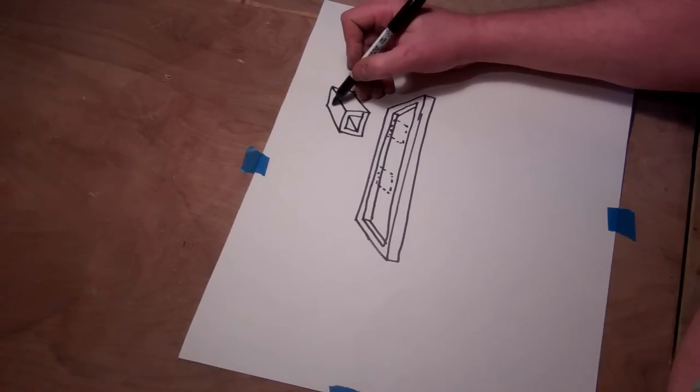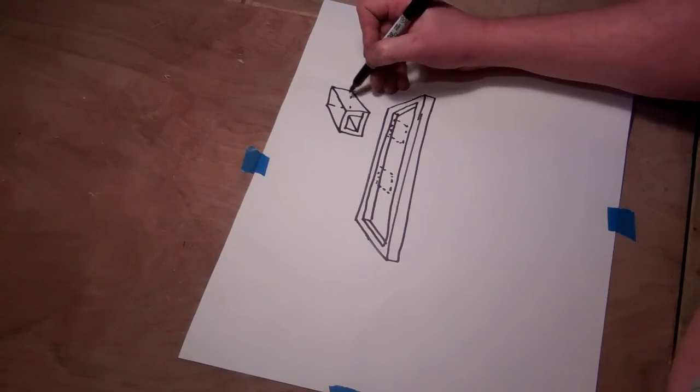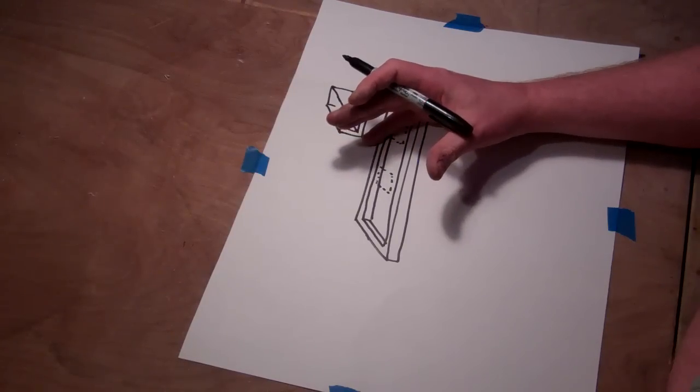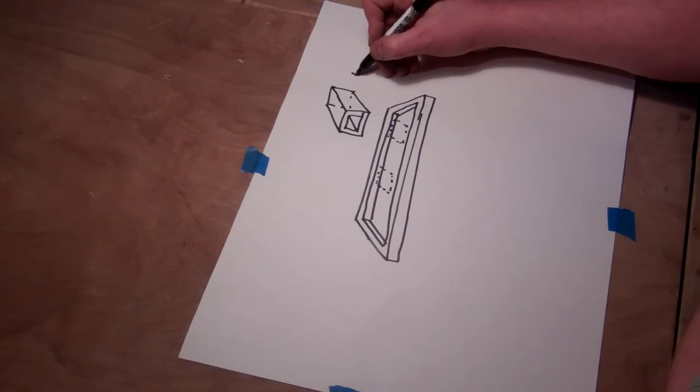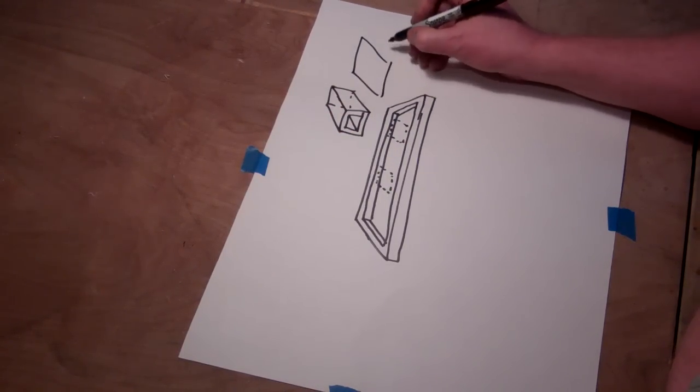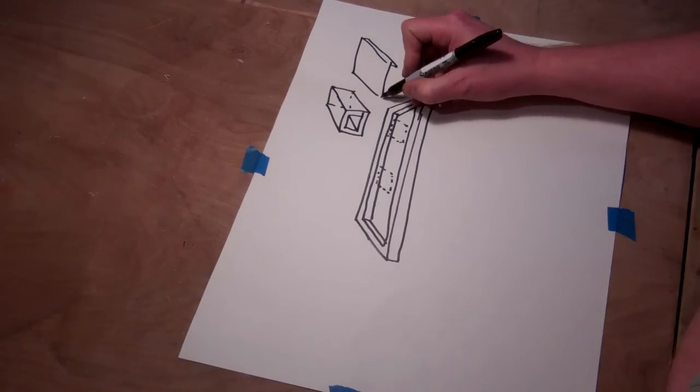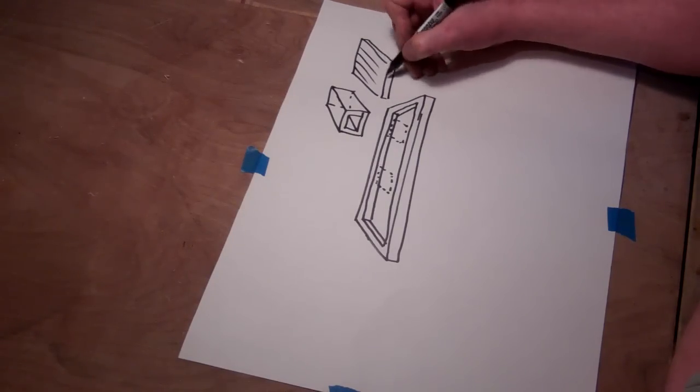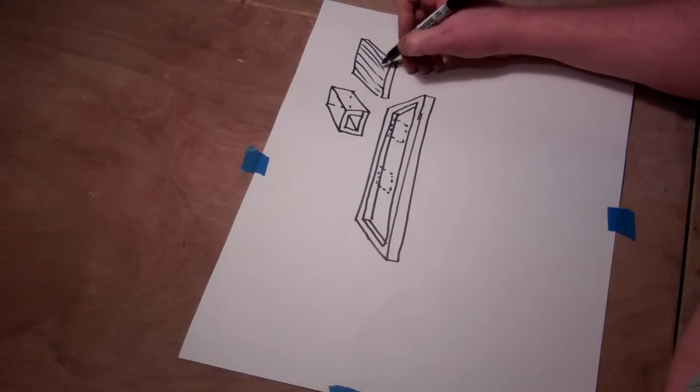And then put a magnet in the bottom, so when you set it on the bar, it stays in place. And then I would do a cutting board the same way. I'd make a really nice cutting board out of a hardwood, like hickory or something like that.